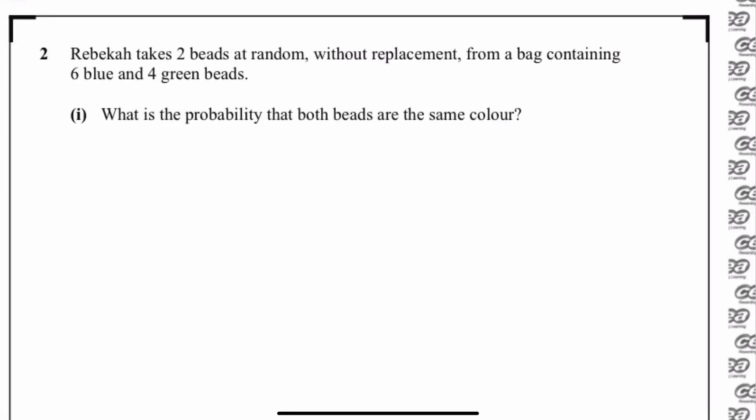This is question 2 from 2019's GCSE Further Maths paper 3, the statistics paper. The question says Rebecca takes two beads at random without replacement from a bag containing six blue and four green beads, so that's a total of 10 in total.